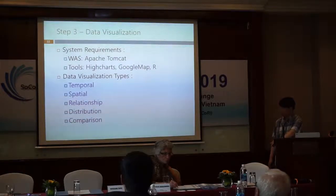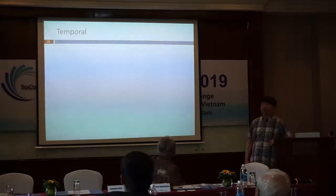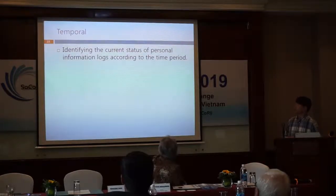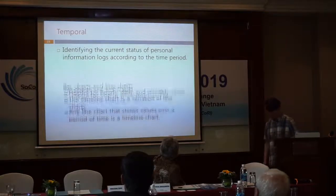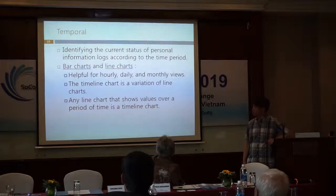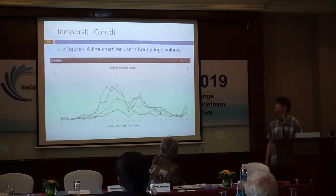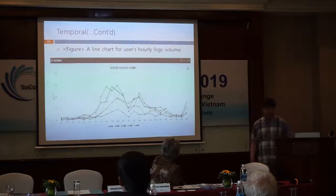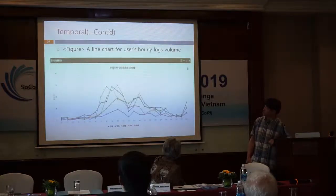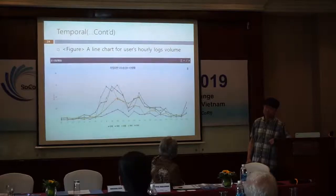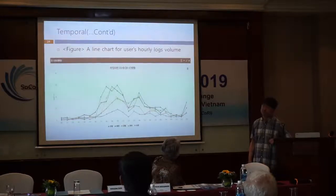Let's look at visualization type one: trend and timeline. It is purposely designed according to the status of personal information loads over a time period. A line chart is best suited for trend-based visualization of data over a period of time. As an illustration, this line chart shows users' hourly load volumes. At 9 a.m., work starts the most, and there are also many loads around 2 p.m. Through this, we can predict normal use of personal information.